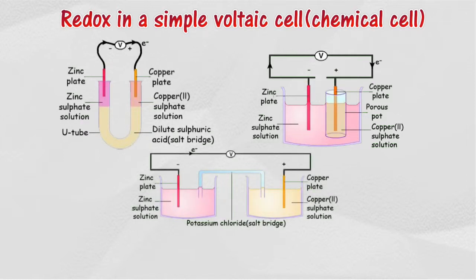A simple voltaic cell consists of two different metal electrodes connected to the end of the wire and the other end dipped into an electrolyte solution. Potential difference generated depends on the difference in the position of the metal used in the electrochemical series.